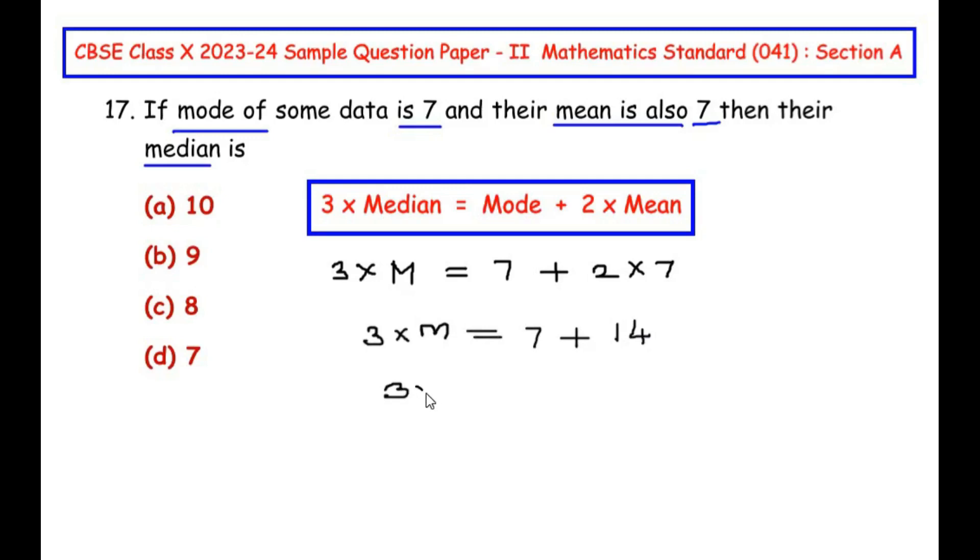Now dividing both these sides by 3, so we have 3 here and here 3. 3 cancels on both sides and 21 divided by 3 is 7.